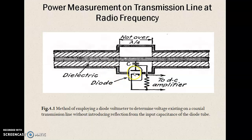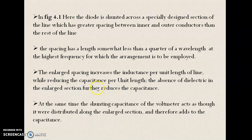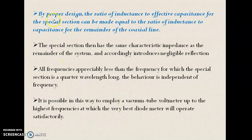By proper design, we can make sure that the ratio of inductance to capacitance at this special section is equal to the ratio of inductance to capacitance at the remaining section of the transmission line. If this ratio is the same, then we can say that the special section has the same characteristic impedance as the remaining section of the transmission line. That will help in introducing a negligible amount of reflection in the system, which was our purpose in the first place when designing this special section.